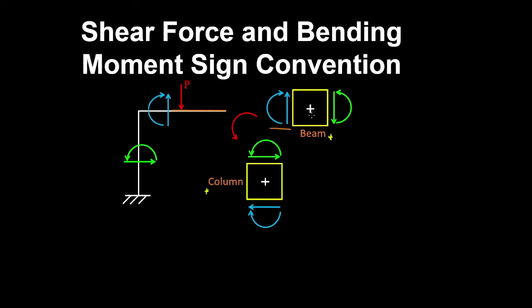And to obtain a sign convention for the column in the frame, we simply rotate the sign convention anti-clockwise.